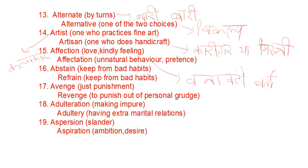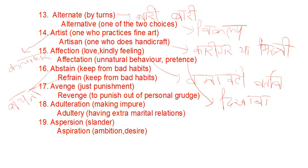Abstain means to keep from bad habits; refrain has the same meaning. Avenge means just punishment. Revenge means to punish out of personal grudge.